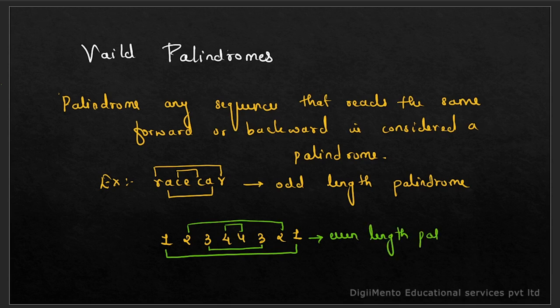This is an even-length palindrome, because all characters form pairs and there is no single character left in the middle. Now let's solve the problem, but first let's understand the real-life usage of palindromes.